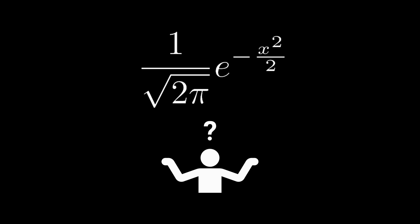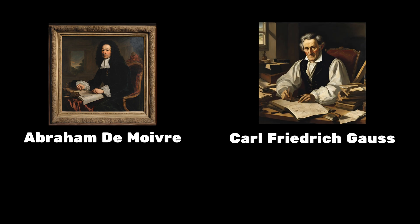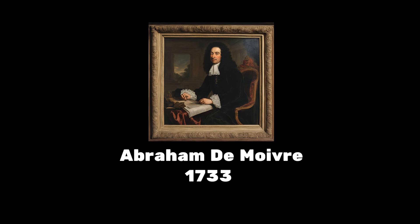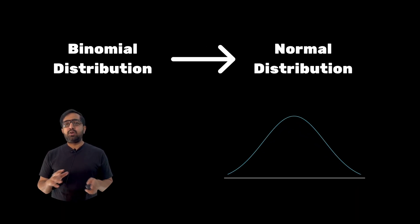To understand that, we have to understand the thought process of the inventors of normal distribution — and actually there were two: Abraham de Moivre and Carl Gauss. They both independently derived normal distribution — de Moivre in 1733 and Gauss in 1809. Abraham de Moivre was not entirely sure about the equation when he derived it; his approach was how binomial distribution would lead to normal distribution.